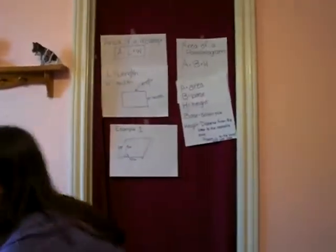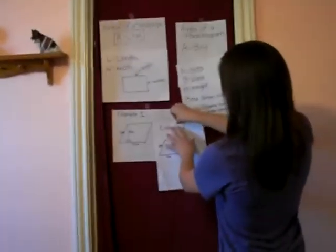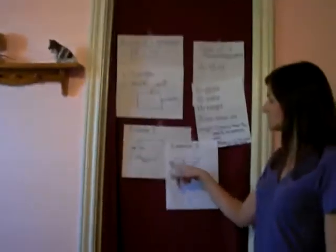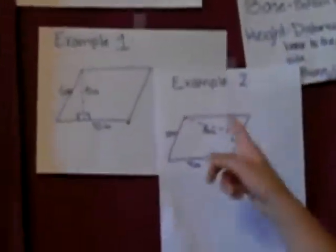So, for example 2, it's going to be a little bit more difficult. And we'll still work on it together. So, example 2 looks different, doesn't it? We have our height going a different way. But, should that matter? No. Right. And why is that? Because it's still perpendicular to one of the sides. Very good.